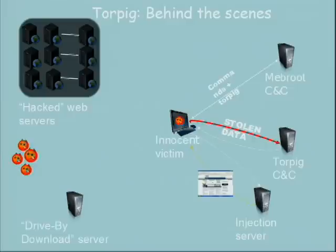This is basically how things work when TorPig is owned by the criminals. Every 20 minutes it connects and gives any new stolen data. If the command and control has new commands, it downloads those. Every two hours it connects to Mebroot to see whether Mebroot has anything to do.